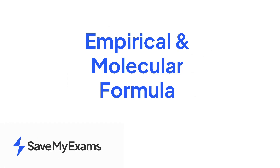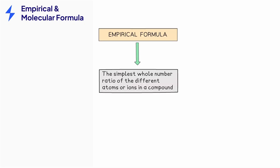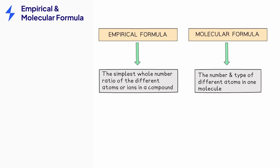This video looks at how to calculate empirical and molecular formula. The empirical formula is the simplest whole number ratio of the different atoms or ions in a compound, whilst the molecular formula gives the actual number of different atoms found in one molecule, such as one molecule of water, which contains two atoms of hydrogen and one atom of oxygen, and a molecule of methane, which contains one atom of carbon and four atoms of hydrogen.